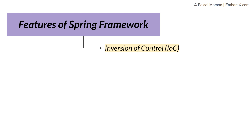The number one feature is Inversion of Control. Inversion of Control means Spring manages the lifecycle and configuration of application objects — the objects created during the lifetime of your application. When you run your application, some objects will be created that you need to use. Spring manages their lifecycle and configuration, reduces dependencies, increases flexibility, and makes those objects available whenever you need them.